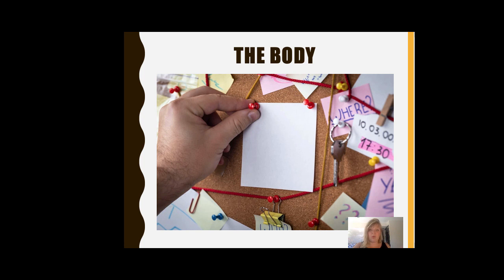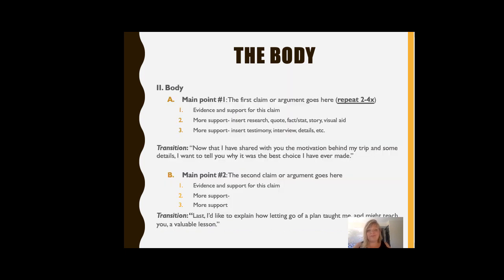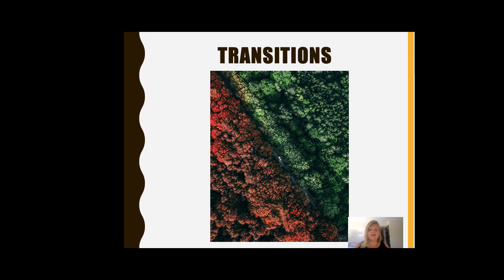Each main point should be supported by sub-points, or the evidence. Evidence can take a variety of forms: from research to quotes, facts, statistics, testimony, personal experiences, even a presentation enhancer like a visual aid. And finally, transitions — a transition goes in between each main part of the speech: between the intro and the body, between the main points, and between the body and the conclusion. Transition statements act as signposts for your audience, telling them where they've been and where they're going. For example, you could say, 'Now that we've heard about A, B, and C, let's move on to D.'